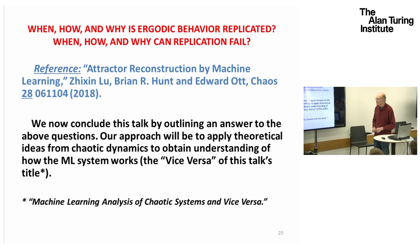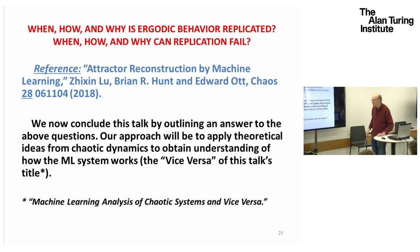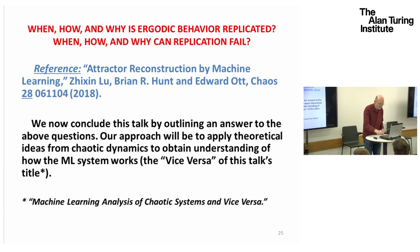So we ask: when, how, and why is ergodic behavior replicated, and when can replication fail? I'll conclude this talk by outlining some of the considerations from our paper, using ideas from chaotic dynamics and dynamical systems theory to analyze the operation of the closed-loop machine learning system.